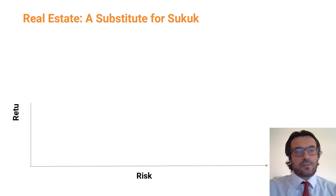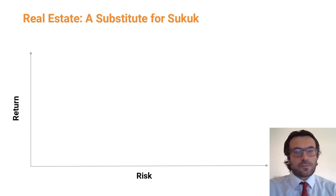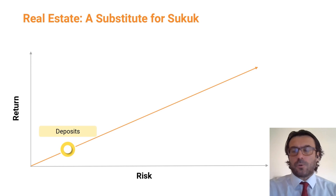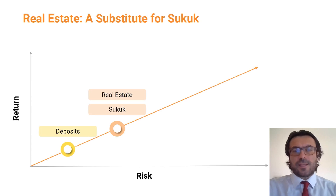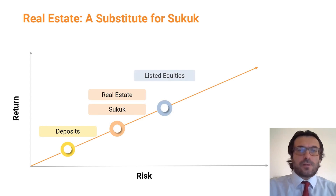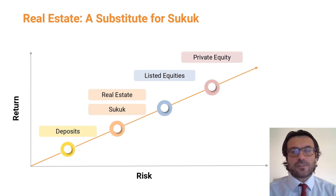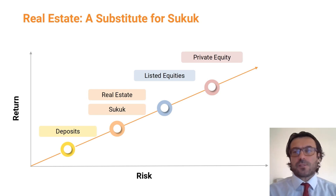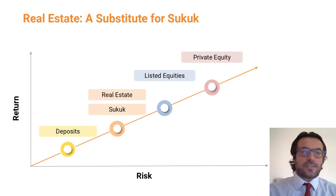If I were to put on a chart the return and the risk profile of various investments, I would certainly put deposits as the lowest risk and lowest return. Sukuk and real estate will go together, and ideally real estate will have a slightly higher yield than sukuk. Listed equities will go further up on the scale, and private equity will be the highest risk and the highest return for investors.